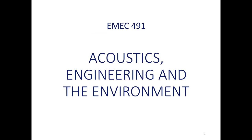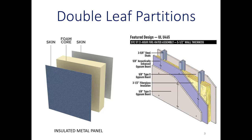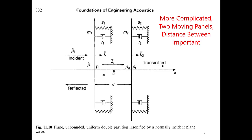Here's part two of sound isolation. A lot of this is going to be focusing on double leaf partitions — anything where we have one leaf, an airspace that may or may not be filled with some kind of sound absorptive material, and then another leaf on the other side. An insulated metal panel or a wall in architecture would be a good example, where we have a massive layer, a cavity with insulation, and then another massive layer.